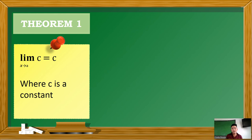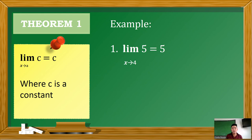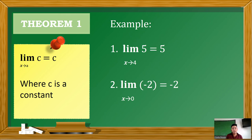Let's start with Theorem 1. The limit of a constant as x approaches a is equal to c. So if you have a constant, then the constant itself is the value or the answer of the limit. For example, the limit of 5 as x approaches 4 — regardless of the value of a, which is 4, the constant 5 is the answer. Another example: limit of negative 2 as x approaches 0 — whether it is negative or positive, the constant is always the limit. That is Theorem 1.